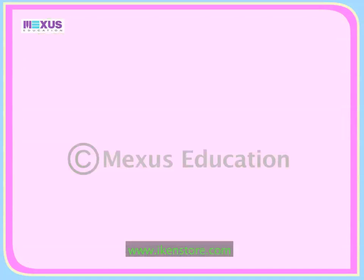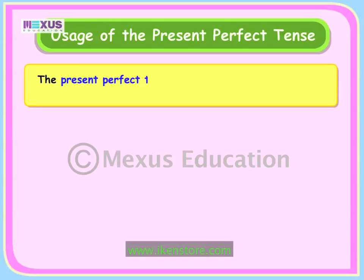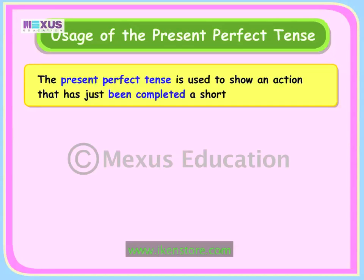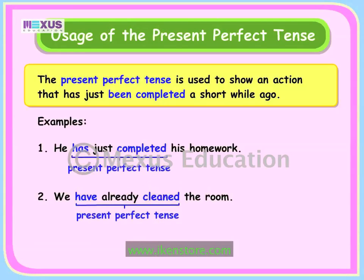Let us now learn the usage of the present perfect tense. The present perfect tense is used to show an action that has just been completed a short while ago. For example: 'He has just completed his homework.' 'We have already cleaned the room.' The verbs 'has completed' and 'have cleaned' are in the present perfect tense since they refer to actions that have just been completed.